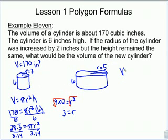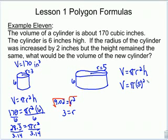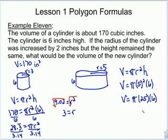The second cylinder's height stays the same but the radius is increased by 2, making the new radius 5. Using the volume formula: V equals pi r squared times height — pi times 5 squared times 6. That's pi times 25 times 6. Calculating that gives 471. So the volume of the bigger cylinder is 471 cubic inches.